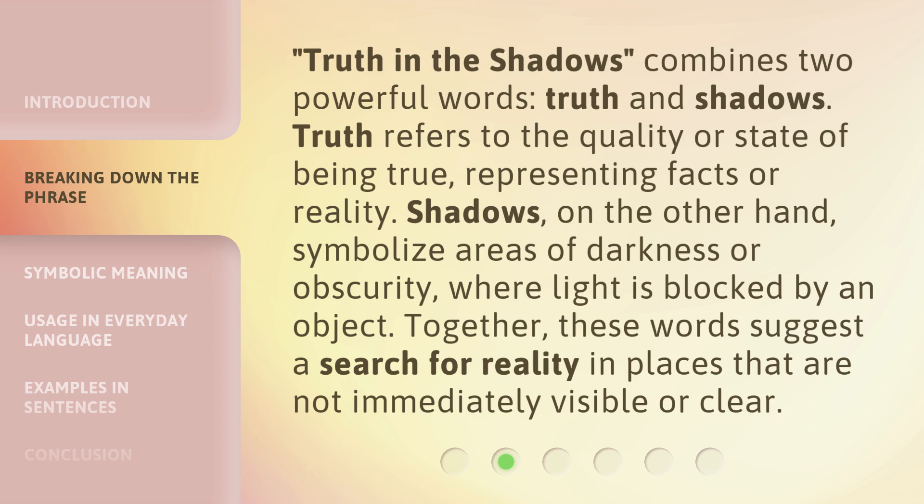Truth in the Shadows combines two powerful words: Truth and Shadows. Truth refers to the quality or state of being true, representing facts or reality. Shadows, on the other hand, symbolize areas of darkness or obscurity, where light is blocked by an object. Together, these words suggest a search for reality in places that are not immediately visible or clear.